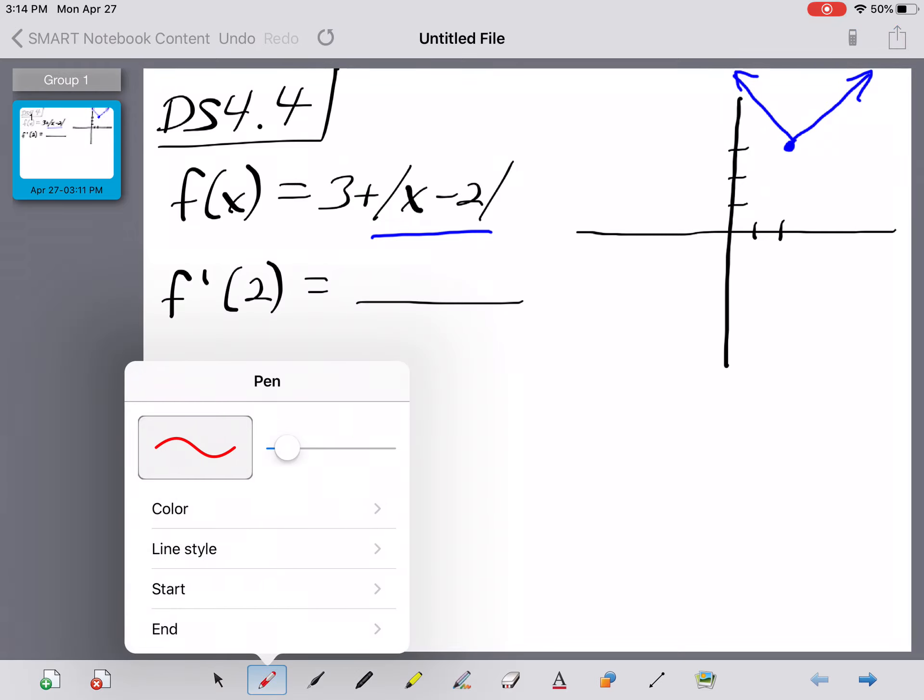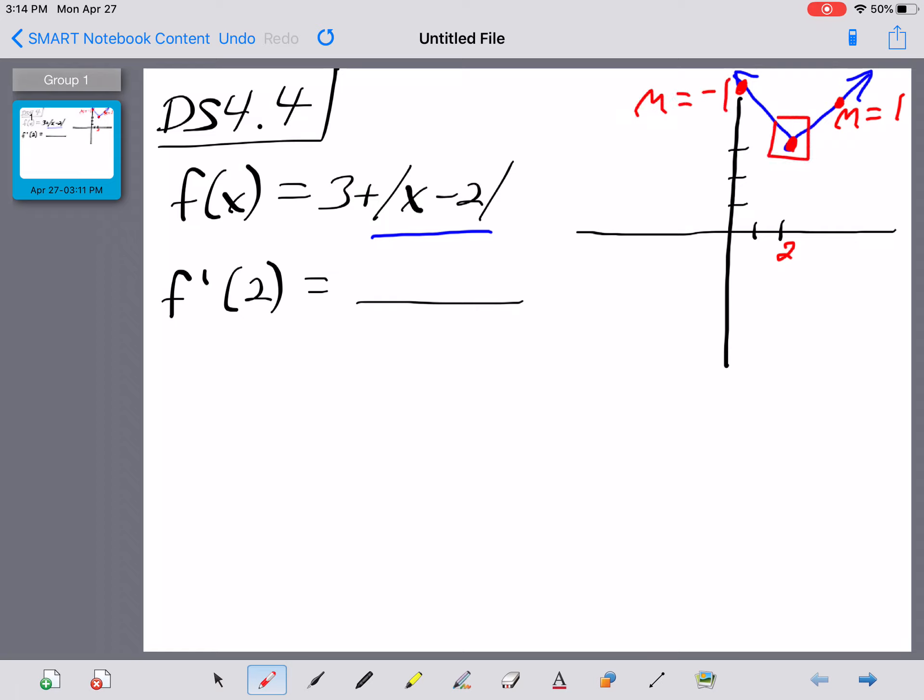And the question they're asking us right here is, what is the value of the derivative of this function right here, where x is equal to 2? Well if it was anywhere to the right of 2, like for example when x was equal to 4, the derivative would be found by the slope of the tangent, which would just equal 1. If it was any value less than 2, like f prime of 0, it would just be the slope of this tangent ray, which would be negative 1. But at this one spot right over here,